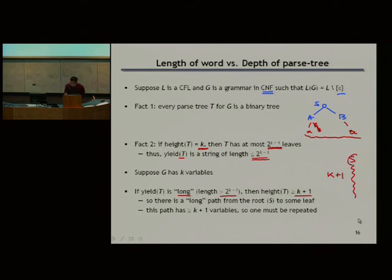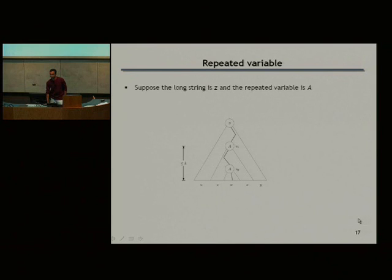Which means it's got K + 2 vertices along the way. The top vertex is the root, which is S, and the bottom vertex is some terminal. K + 2 vertices in total. One of them is a terminal, so K + 1 non-terminal vertices along the way. But I only have K variables. So somewhere along the way, there is a repeated variable. That's the entire proof. If I have a long tree, the parse tree must have some repeated variable along the way.